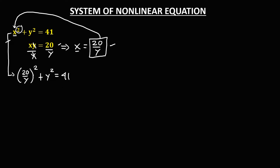Simplify by distributing the exponent. So 20 squared is 400, giving us 400 over y squared, plus y squared, equals 41.